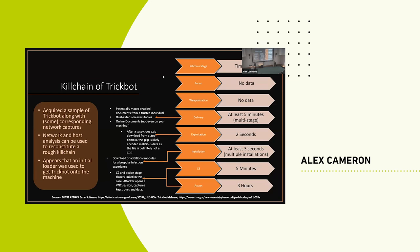It then took about three seconds to install additional modules. In that two seconds it exploited, had a brief look around, and already decided what modules it wanted — that's how fast it is. You can pause at delivery, but once something is on your machine things change exceptionally fast. After that, command and control lasted five minutes where an attacker jumped in and made some changes, and then three hours later the attacker performed some actions.